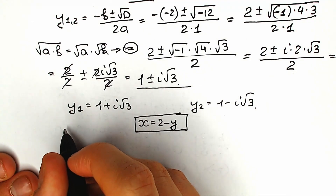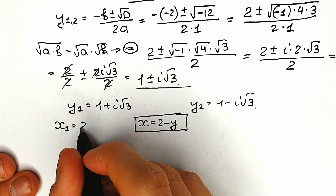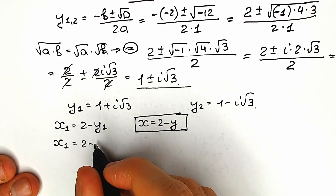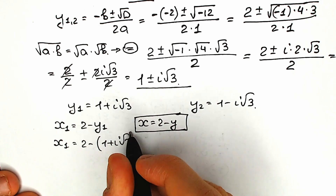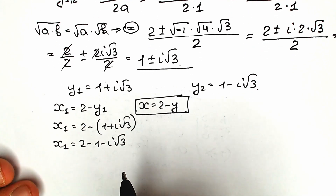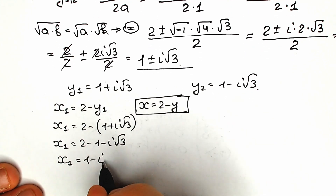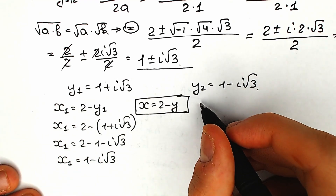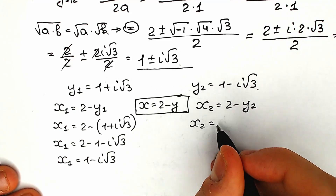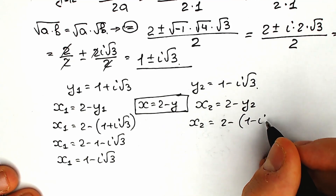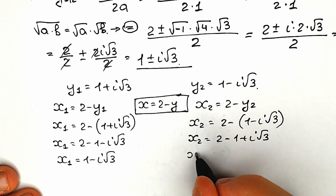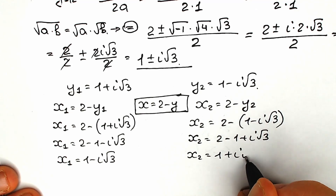For x₁: x₁ equals 2 minus y₁ equals 2 minus (1 plus i square root of 3) equals 1 minus i square root of 3. For x₂: x₂ equals 2 minus y₂ equals 2 minus (1 minus i square root of 3) equals 1 plus i square root of 3.